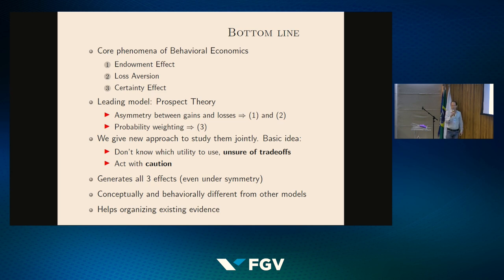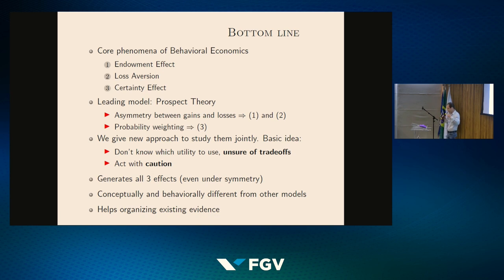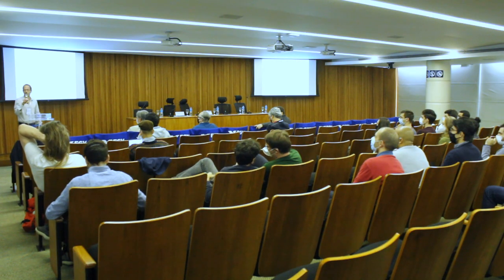The leading model in behavioral economics is prospect theory, which has two layers. First, there is some asymmetry between gains and losses — losses loom larger than gains — and this generates both the endowment effect and loss aversion. If you also want to capture the certainty effect, you add probability weighting. What we want to do here is give a new approach to study all three phenomena jointly, coming from the same source. The idea is that individuals do not know which utility to use — they are unsure about their utility function or the trade-off between goods — and they resolve this uncertainty with caution, in a way I will make precise. This approach generates all three effects even when we impose symmetry.